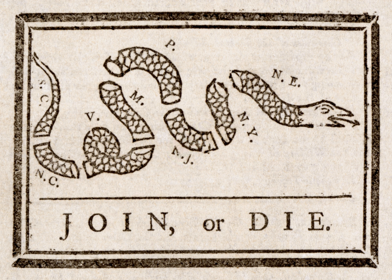The New England colonies included: Province of New Hampshire, established in the 1620s, chartered as Crown Colony in 1679; Province of Massachusetts Bay, established in the 1620s, a Crown Colony 1692; Colony of Rhode Island and Providence Plantations, established 1636, chartered as Crown Colony in 1663; and Connecticut Colony, established 1636, chartered as Crown Colony in 1662.